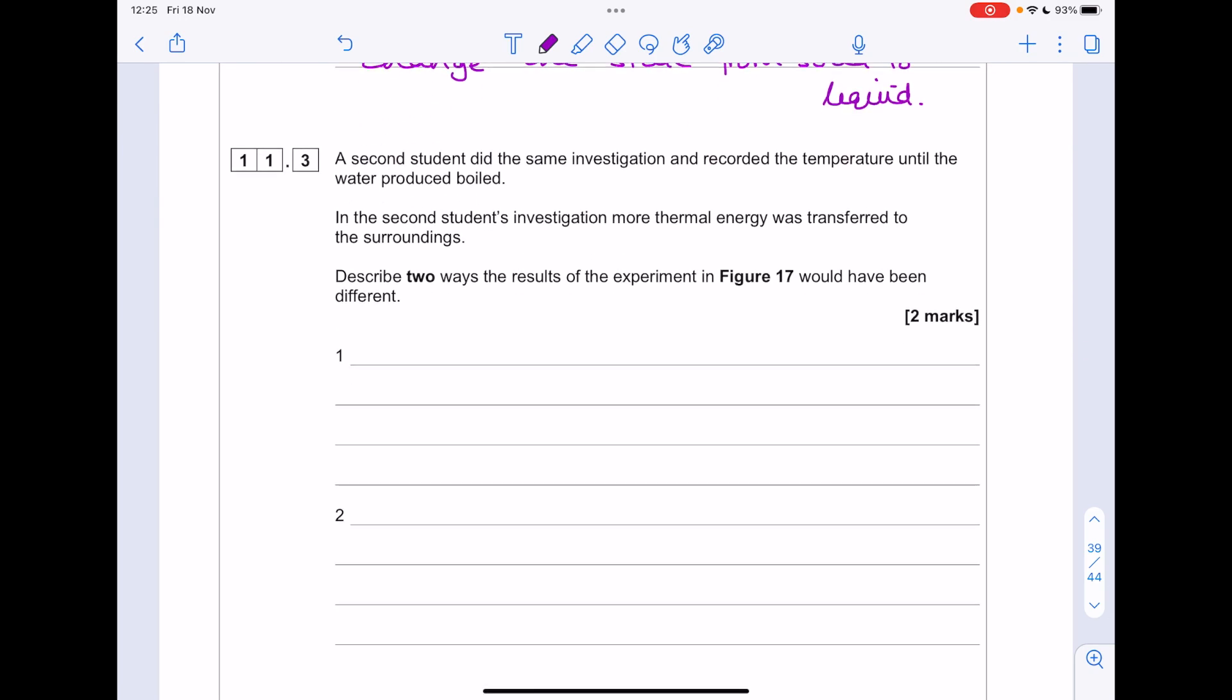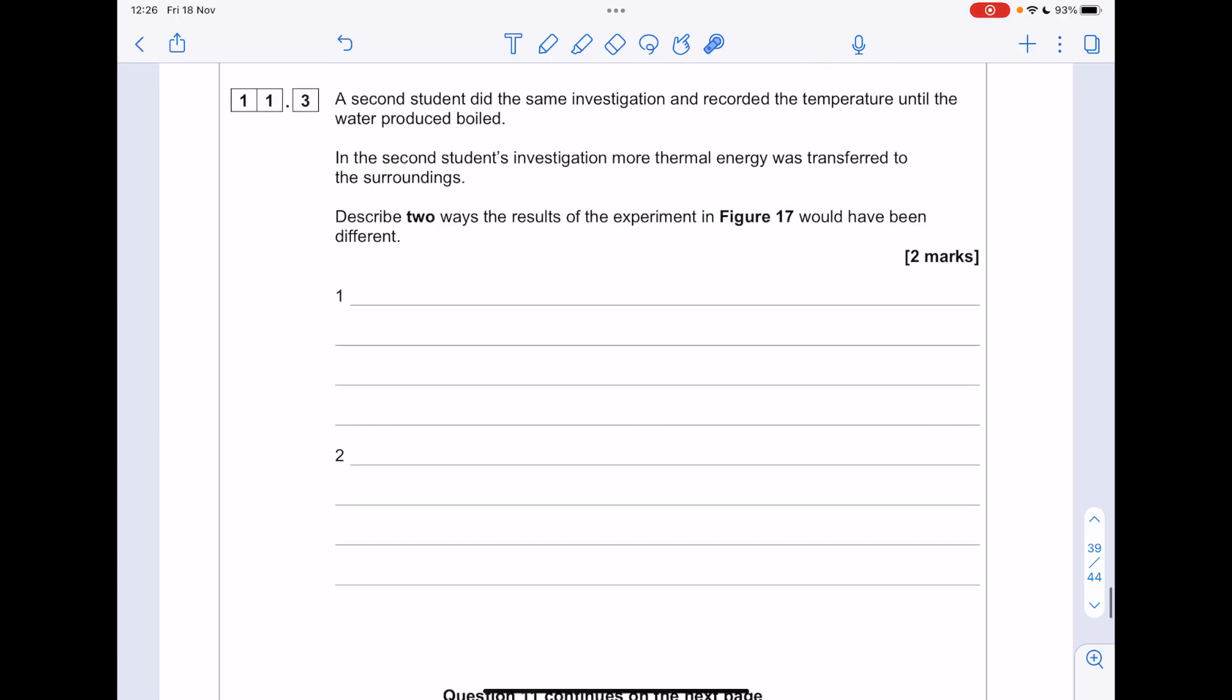The second student did the same investigation and recorded the temperature until the water produced boiled. In the second student's investigation, more thermal energy was transferred to the surroundings. Describe two ways the results of the experiment in figure 17 would have been different. Well, if more energy is being wasted into the surroundings. Well, clearly it will take longer for the ice or the water to increase in temperature. Longer for them to change state. And you might even notice that the change in temperature might not be linear.